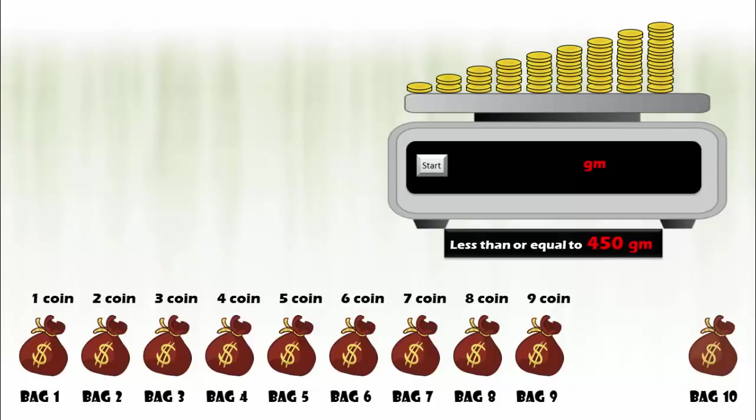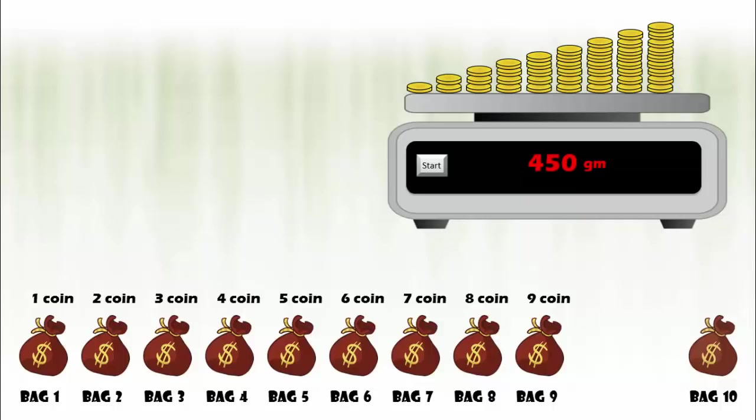So for any value less than 450 grams, the approach will be the same as we discussed. And if the weight displayed is 450 grams, then it means all the bags from 1 to 9 are perfect, whereas bag 10 has the defective coins.